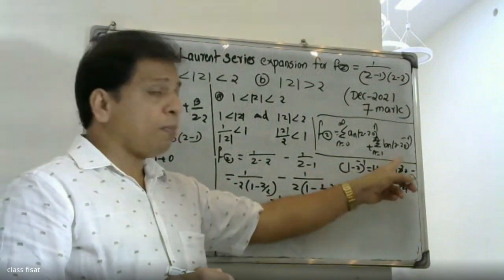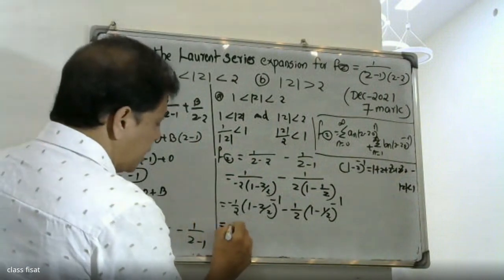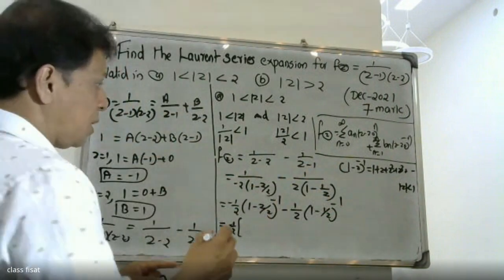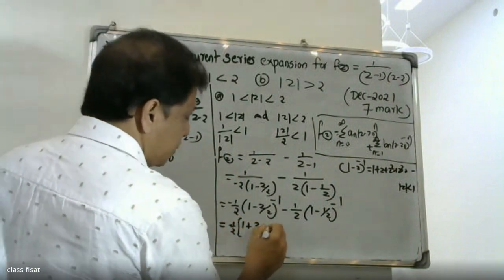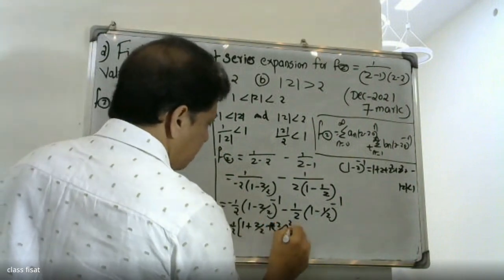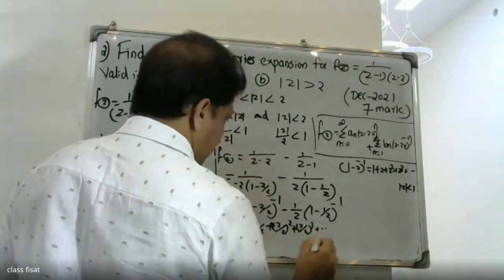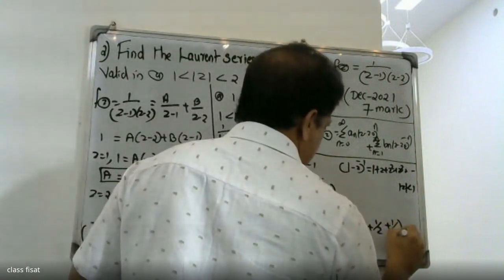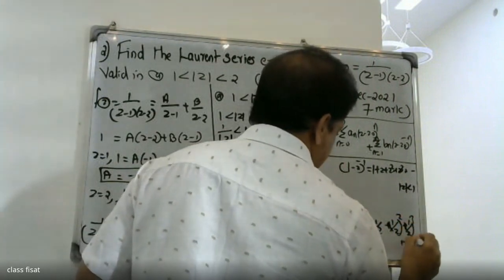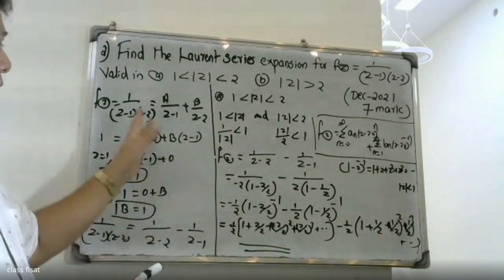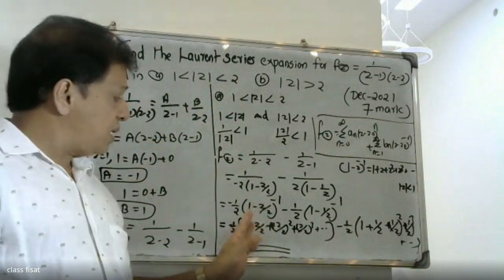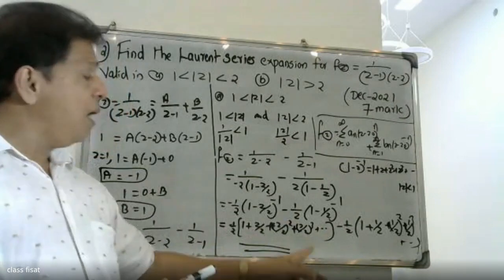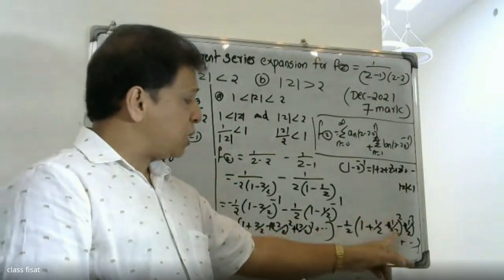Expanding 1 divided by (1 minus z/2) gives one plus z plus z-squared plus etc. And minus one divided by z times 1 divided by (1 minus 1/z) expanded gives minus one divided by z times the series: one plus one-by-z plus one-by-z whole square plus one-by-z whole cube plus etc. This gives the Laurent series expansion for the first region.